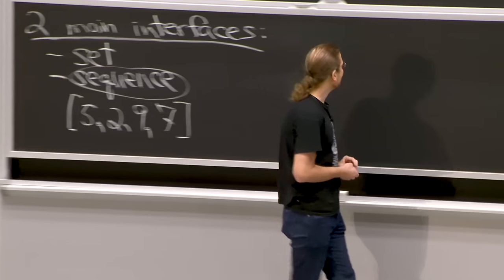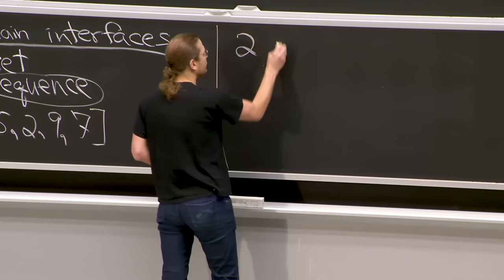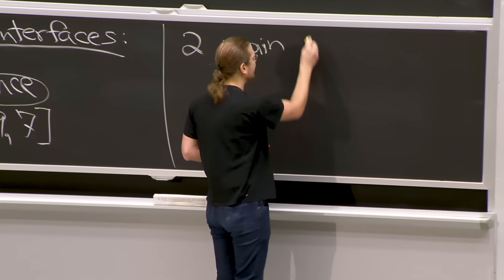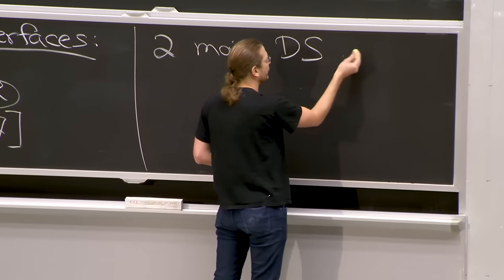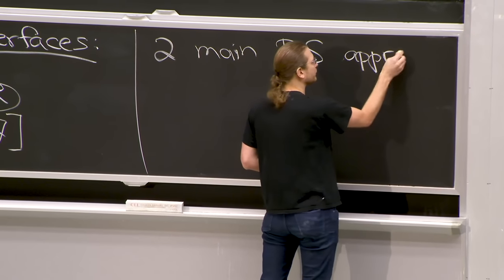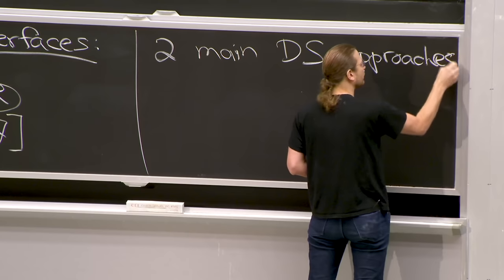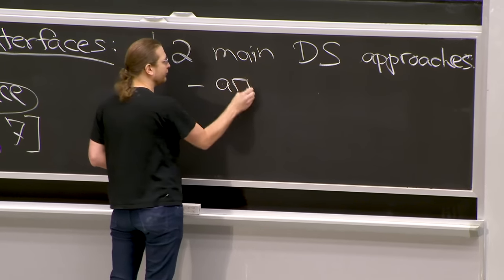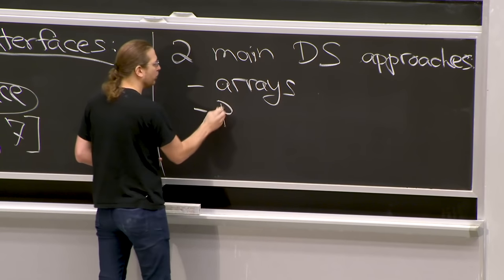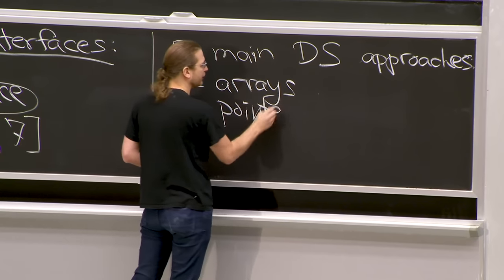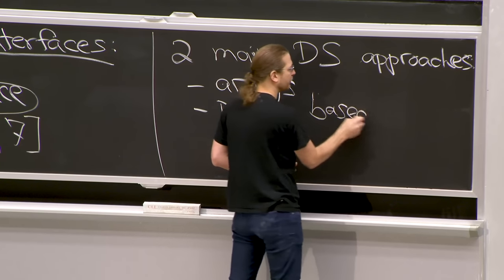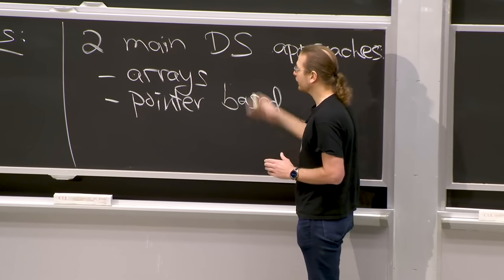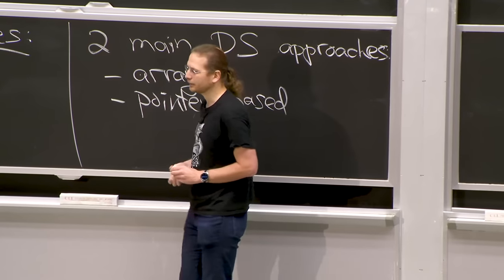We're going to have two main data structure tools or approaches. One is arrays, and the other is pointers - pointer-based or linked data structures. You may have seen these; they're used a lot in programming. We're going to see both of these today.